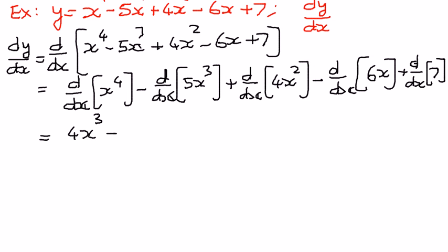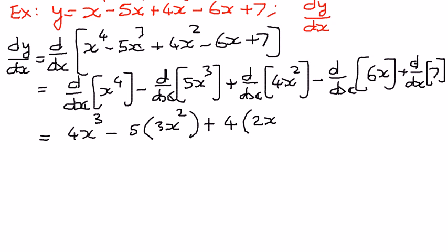Minus d by dx of 5x to the power of 3 — 5 is a constant, so we write this as 3x to the power of 3 minus 1, which equals 3x squared. Plus 4 times d by dx of x to the power of 2 — when we differentiate x squared it gives 2x to the power of 2 minus 1, which is 2x. Then minus d by dx of 6x — 6 is a constant and d by dx of x equals 1. Plus d by dx of a constant equals 0.